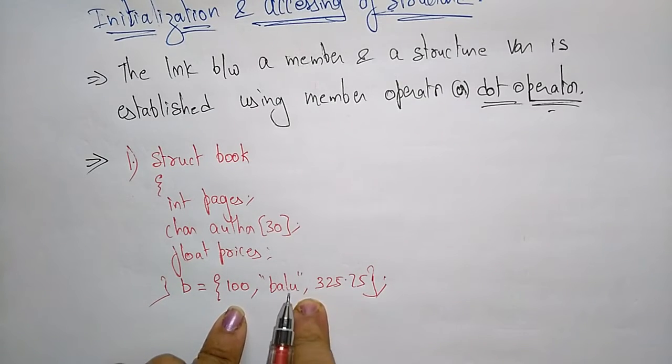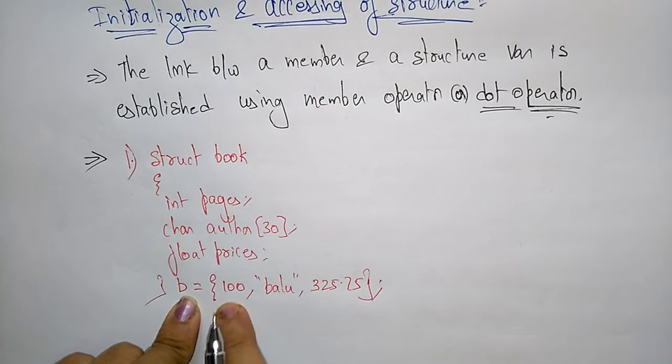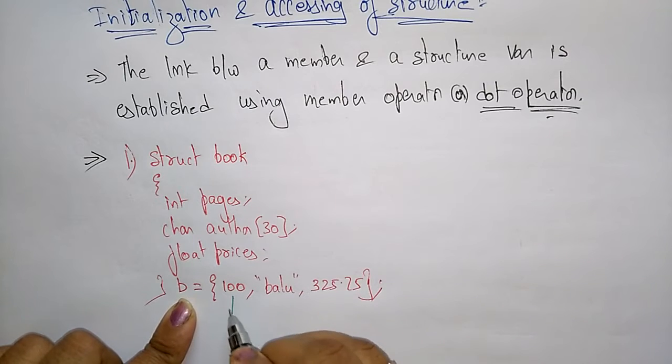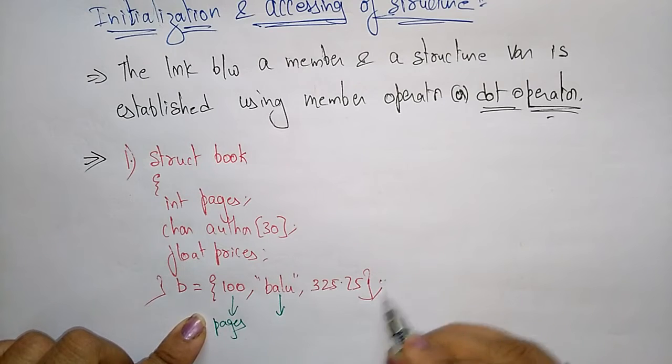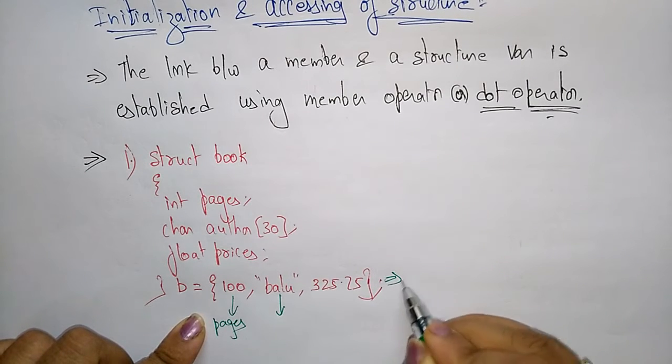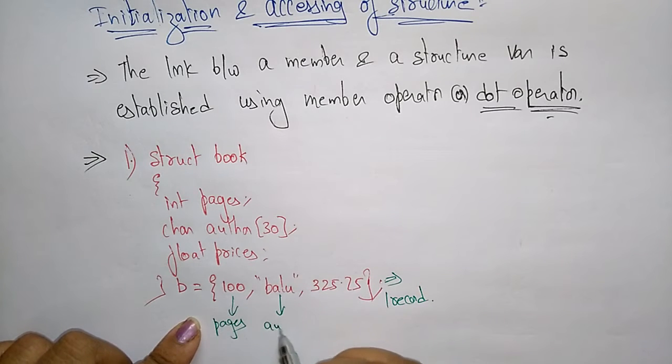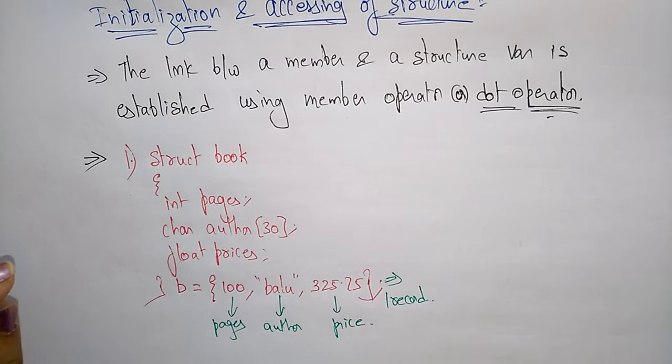This is how you initialize the structure - one value is initialized. The book B consisting of pages, author and price - 100 pages, this is the author, and here the price. This is initialization of a structure. Let us see another example, another method of initializing.